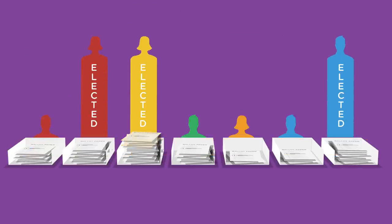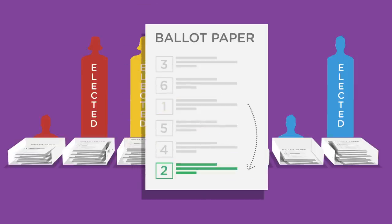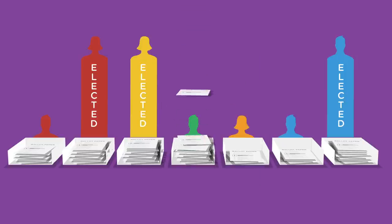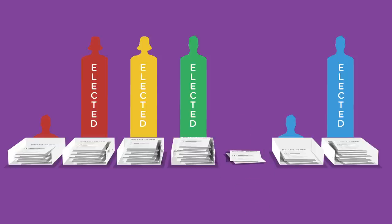Some candidates will have more than the quota. In that case, their extra or surplus votes are transferred to other candidates based on the proportion of second preferences. The votes are then counted again. The transferred votes will be enough to make some new candidates reach the quota. If nobody new is elected, the candidate with the least amount of votes is eliminated from the race and his or her votes transferred. The process then continues until all seats are filled.